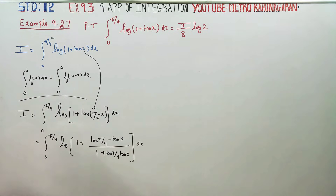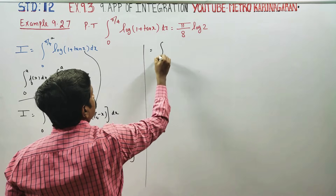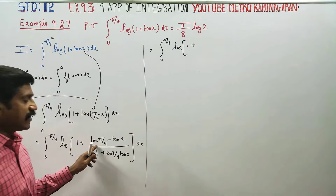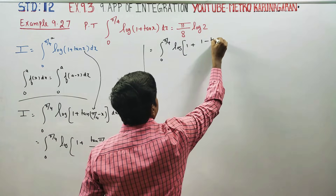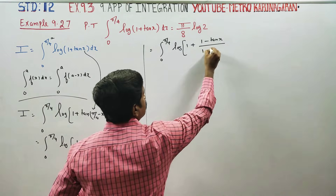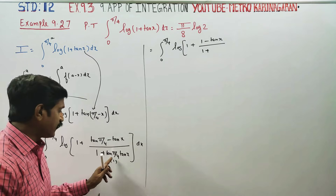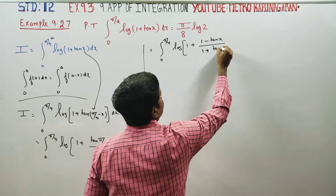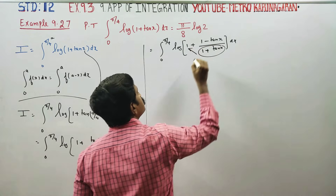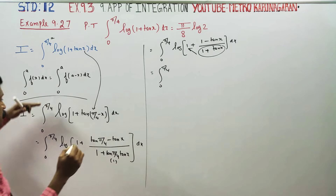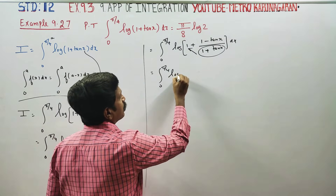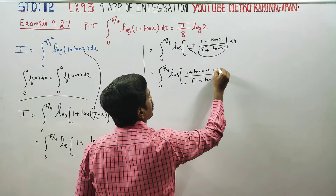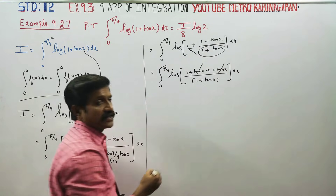Applying the tan(a minus b) formula, we get 0 to pi by 4, logarithm of 1 plus tan(pi by 4 minus x). Since tan 45 equals 1, this becomes 1 minus tan x divided by 1 plus tan x. Now cross multiply.